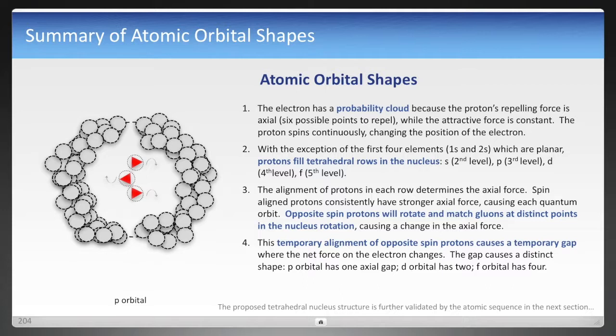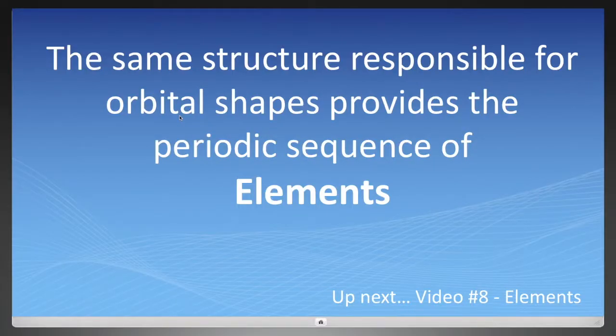And that's it. That's how atomic orbital shapes can be explained by waves and by a unique structure of the proton that has been overlooked for many years, which could be four electrons and one positron, otherwise called the pentaquark. That's it. And that concludes the video on orbital shapes. And in the next video, we're going to discuss the structure, the same structure responsible for the shapes in this video, and how that affects the periodic sequence in the atomic elements in video number eight. See you soon.